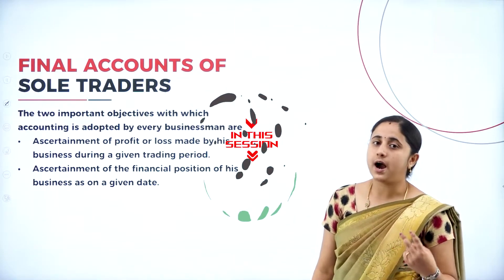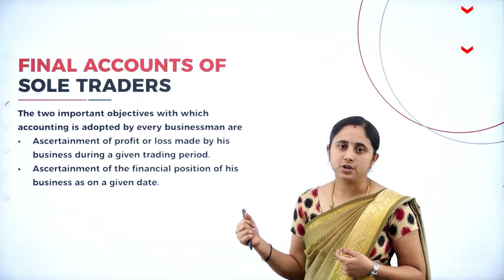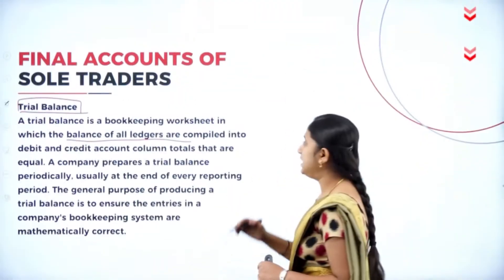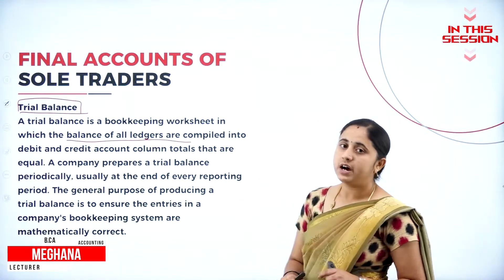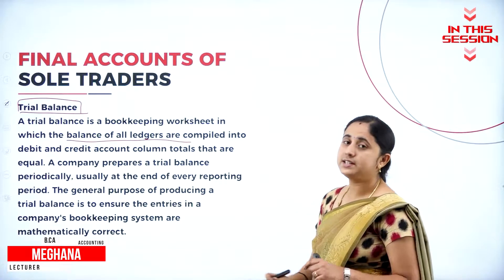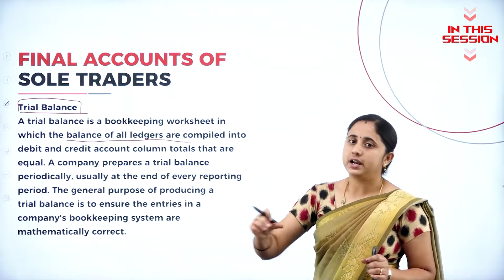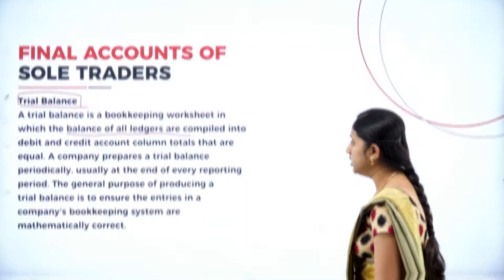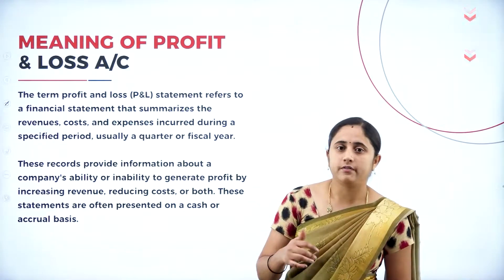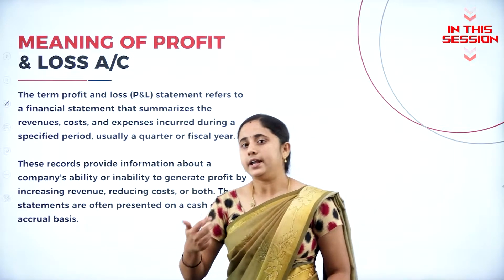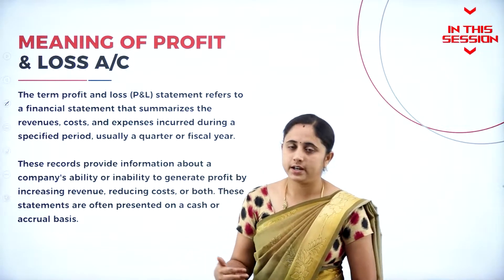The two main objectives of accounting are to ascertain the profit and to know the financial position. The balance of all the ledger is written in a bookkeeping worksheet called trial balance, where all the debit and credit items should be equal. In the profit and loss account, you consider all the revenue, income, expenses, and costs in the financial year.